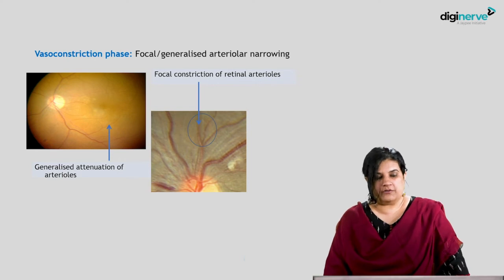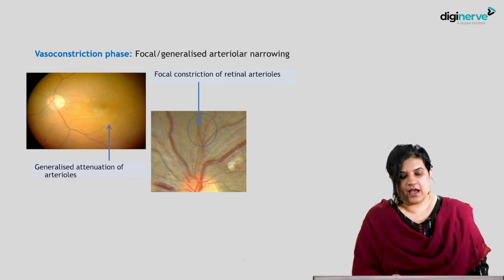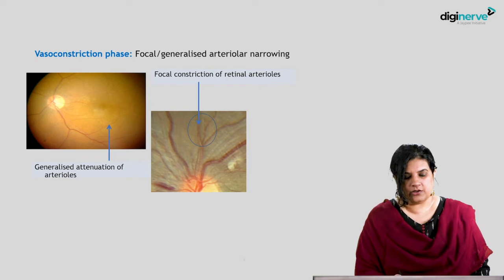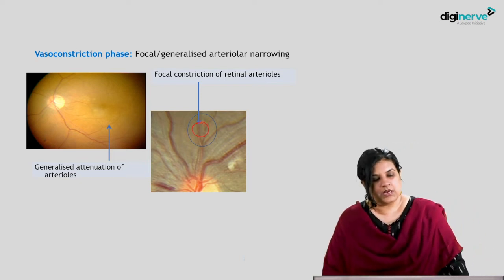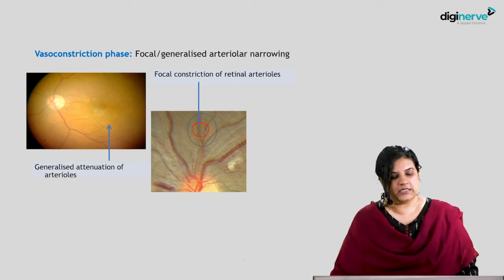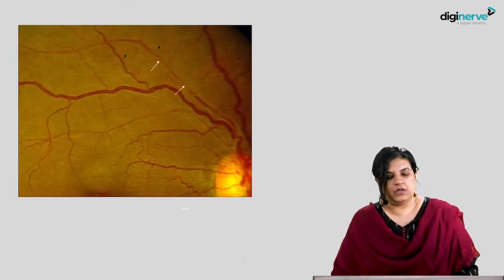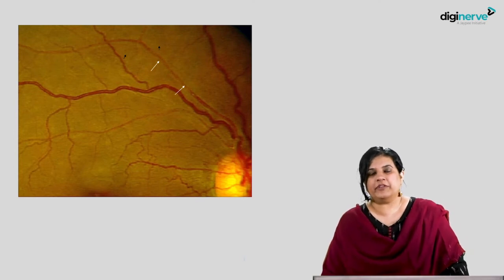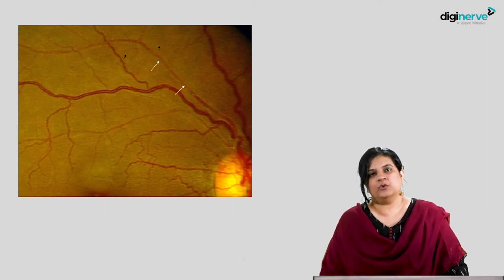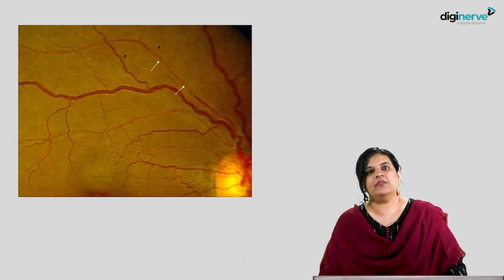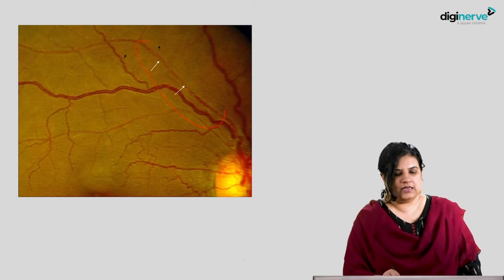In the vasoconstriction phase, there can be focal or generalized arteriolar narrowing. In the image with the blue circle, we can see that the arterioles are narrowed in that segment, while in the image on the extreme right, there is generalized attenuation of the arterioles. There can also be slight segmentation of blood flow through the vessels due to arteriosclerotic changes — segments with sclerosis appear tighter, producing a broken segment of blood flow as visible in these blood vessels.